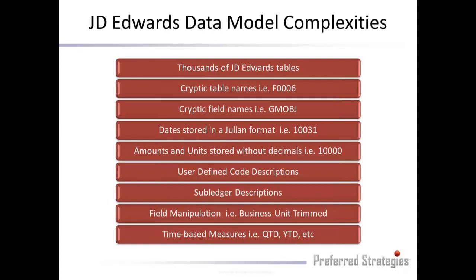What are some of the JD Edwards data model complexities? There's a lot — this is just touching the surface. There are thousands of JD Edwards tables within the data model, with cryptic names like F0006 and field names like GMOBJ. Dates are stored in Julian format, amounts and units are stored without decimal places, and pulling user-defined code descriptions can be difficult. Sub-ledgers and data across modules also present challenges — for example, equipment number on the GL might be a 25-character alpha field, while it could be a numeric field in fixed assets.